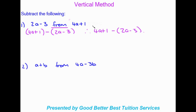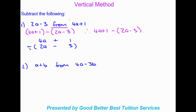We put this into vertical method: 4a plus 1 on top, then subtract with like terms underneath each other — 2a under 4a, and negative 3 under positive 1. Because of the brackets, the negative multiplies through: 2a becomes negative 2a, and the negative 3 becomes positive 3. The outer negative then falls away.